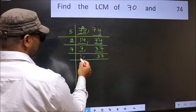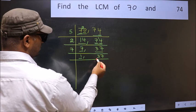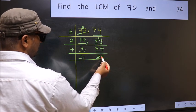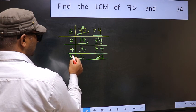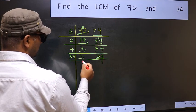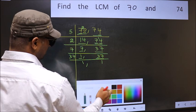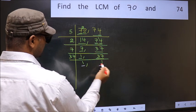Now we got 1 here. So focus on the other number 37. 37 is a prime number. So we got 1 in both the places.